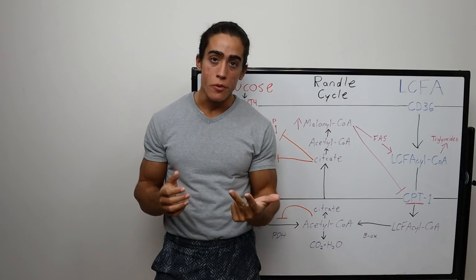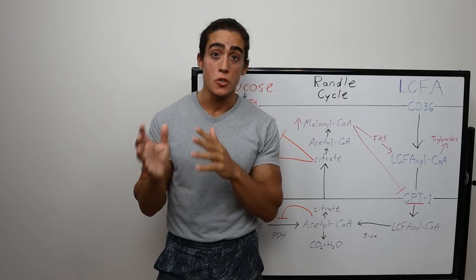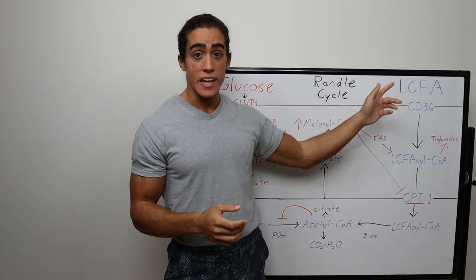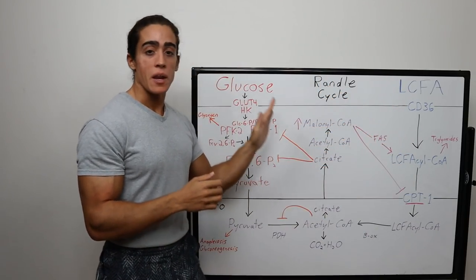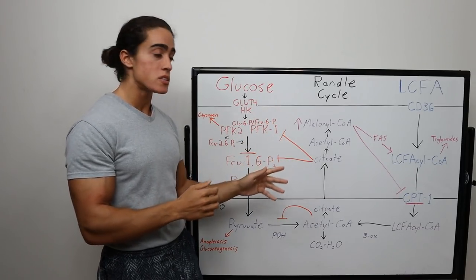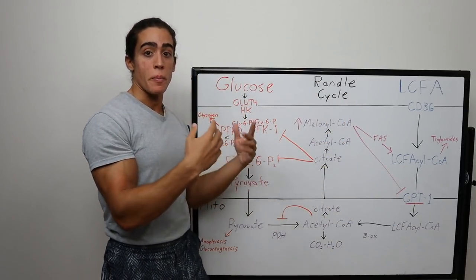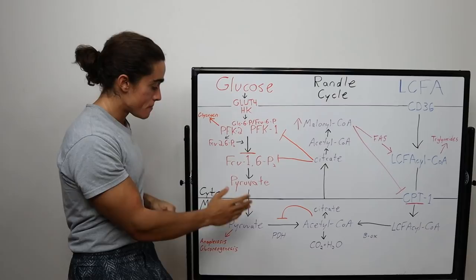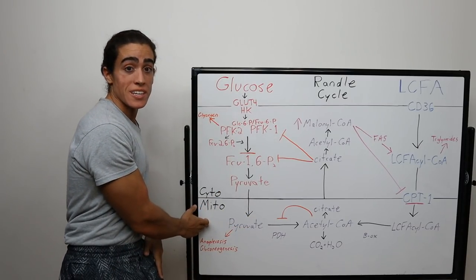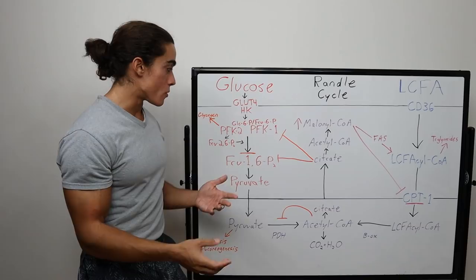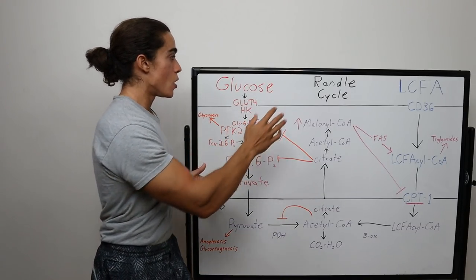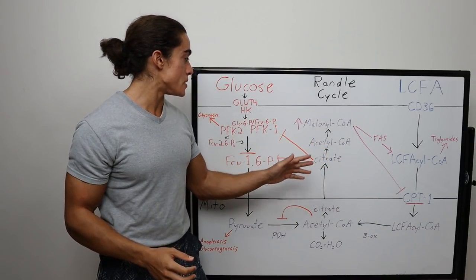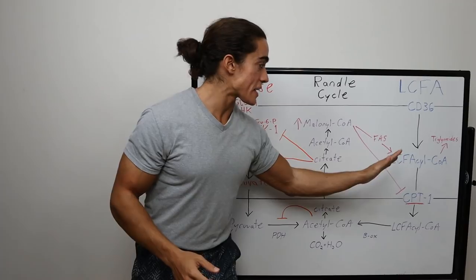Whenever you consume an energy source — fat, carbohydrates, or both — your body prioritizes using one of them. Here on the left we have the glucose pathway in red, and on the right is the fatty acid pathway in blue. In purple, in the middle, are the cell energy components produced towards the end of either pathway. The middle shows what occurs in the cytoplasm of the cell, and the bottom is what occurs in the mitochondria. When you consume both, here in orange we have what happens when fatty acids are blocking glucose, and in pink we have what happens when glucose is blocking fatty acids.